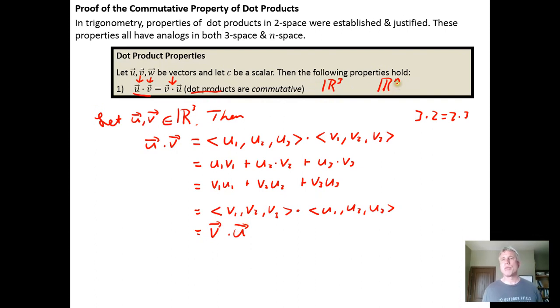And then the question would be, how would you prove this for n dimensional space when we don't know how many components we have? We just know there's n of them. And the way that you deal with it is essentially just say let u and v be elements of Rn.